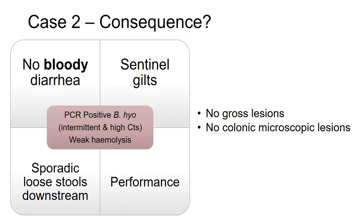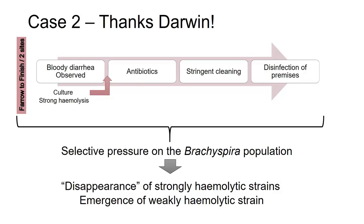No gross lesions, no colonic microscopic changes whatsoever. So again, we didn't have disease, but we were starting to see this bug. In this case it's a bit different — we were literally putting evolutionary pressure on the population, and that's how we interpret this. We did a great job and it actually worked — we stopped clinical disease. But unfortunately, what we were targeting was strongly hemolytic Brachyspira, and we did such a good job that the weakly hemolytic strains started emerging. We literally selected for the weakly hemolytic strains. This is likely what's happening all around the globe — we do a good job finding this bug, and then something else pops up that is similar but not the same, and doesn't seem to be associated with disease.